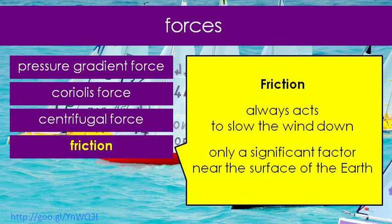A layer of air flowing past another layer of air doesn't have a lot of friction — air doesn't have very much friction with itself. When we're talking about friction in the atmosphere, we're talking about where the winds are interacting with the surface of the Earth: air flowing through trees, power lines, buildings, over waves in the ocean, over high mountains. It's really only near the surface of the Earth that we need to worry about friction, and friction will always be acting to slow the winds down.